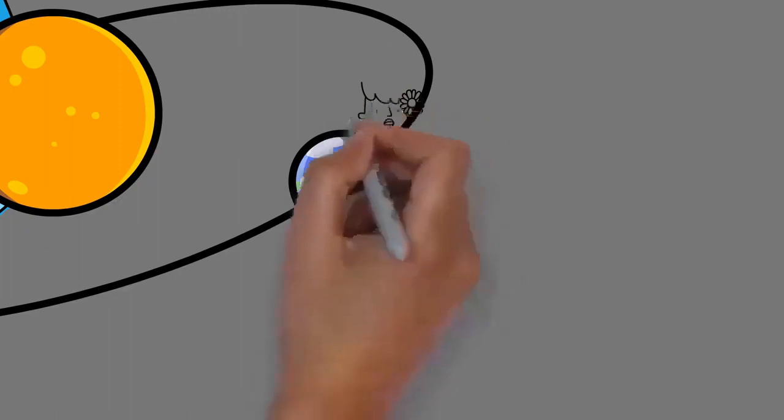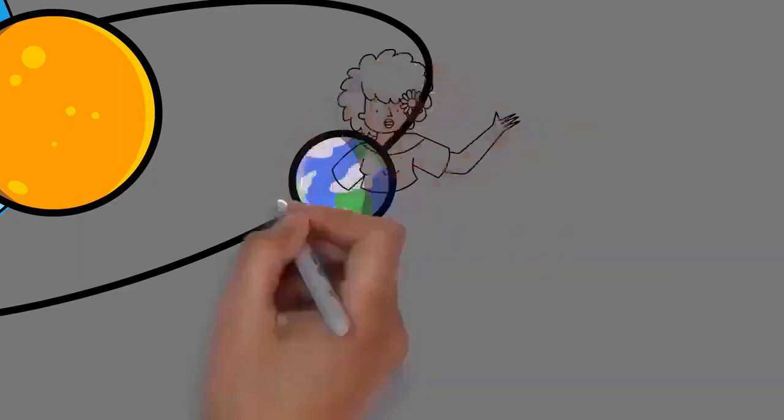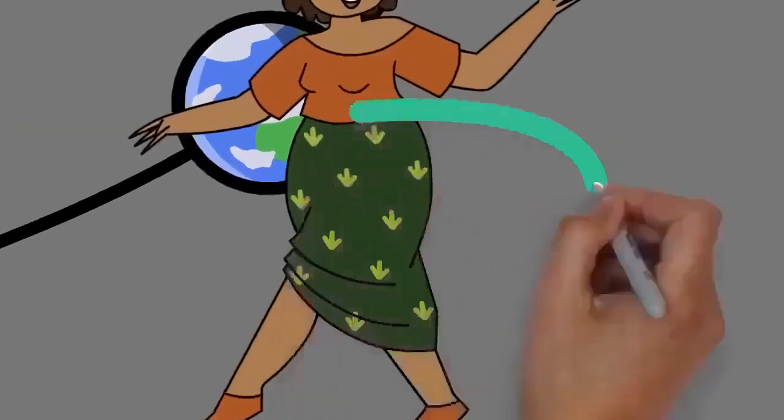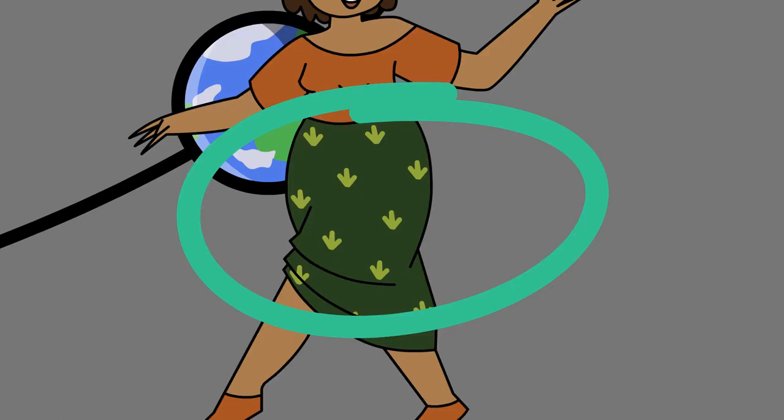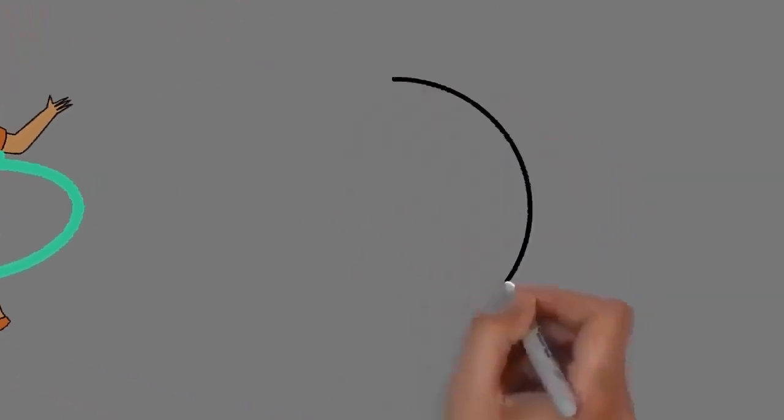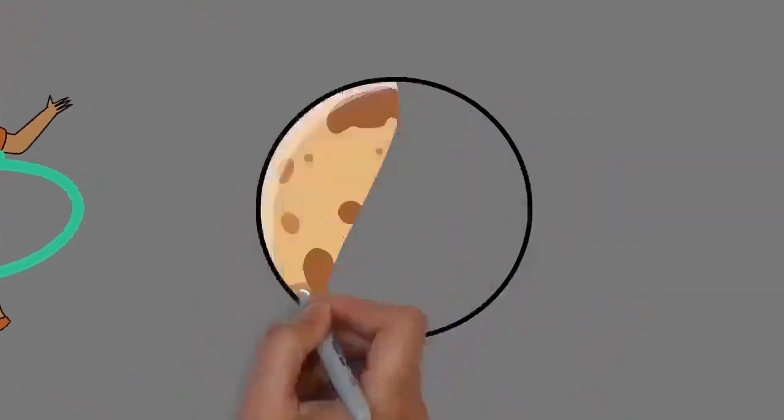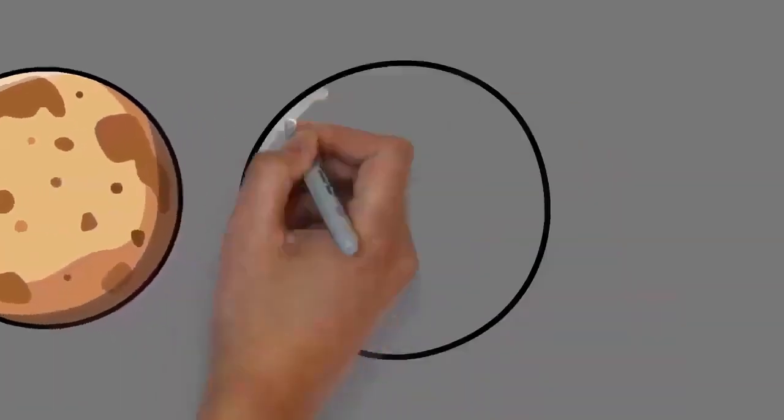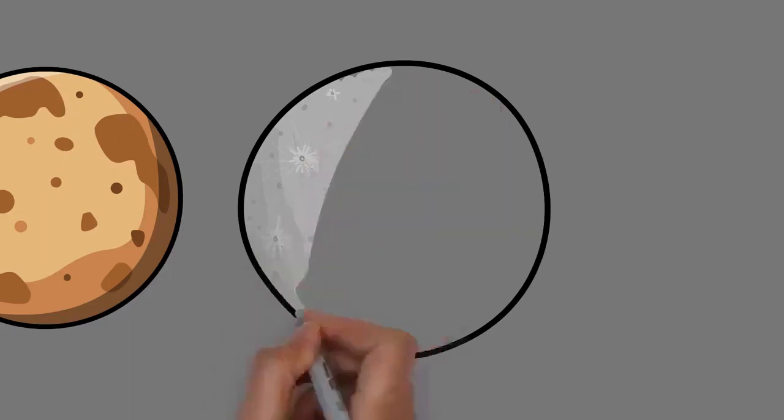Earth is orbited by one permanent natural satellite, the Moon, which orbits Earth at 384,400 kilometers, 1.28 light seconds, and is roughly a quarter as wide as Earth. Through tidal locking, the Moon always faces Earth with the same side, which causes tides, stabilizes Earth's axis, and gradually slows its rotation.